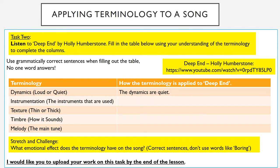For task two, this is based on applying terminology to a song — the terminology that you have learnt in previous lessons: dynamics, instrumentation, texture, timbre, and melody. I would like you to listen to Deep End by Holly Humberstone. Once you've listened to it, I'd like you to fill in the table below using your understanding of the terminology to complete the columns. Please use grammatically correct sentences when filling out the table — no one-word answers. I've filled out dynamics for you, the first column, so you can use that as a basis. I've put a link to the YouTube video of Deep End in the yellow box on the right.